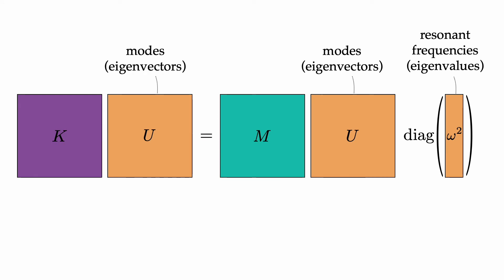Modes and their resonant frequencies are defined by this generalized eigenvalue equation, which involves the stiffness matrix K and mass matrix M. These matrices are functions of material properties. Given a particular geometry, K and M are determined up to a scaling factor by all the modes and resonant frequencies of the object.